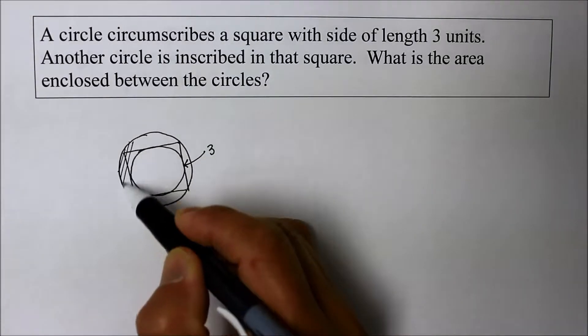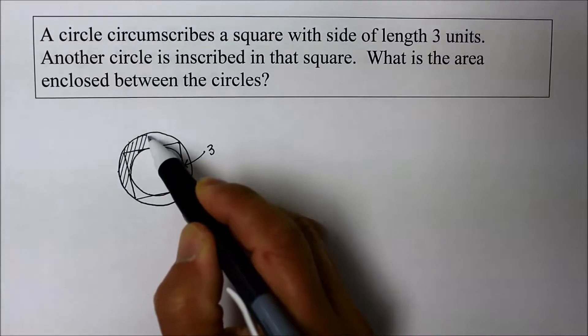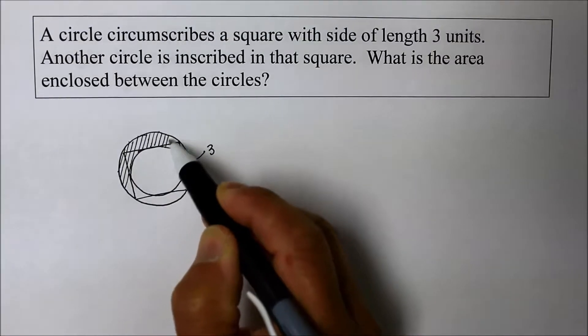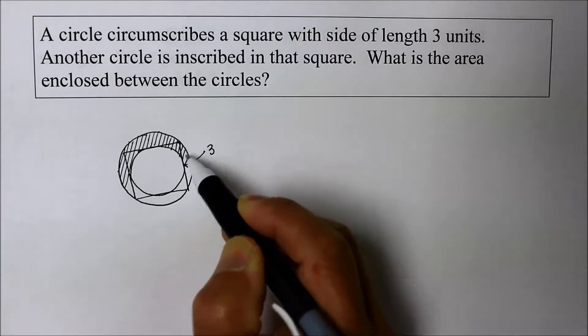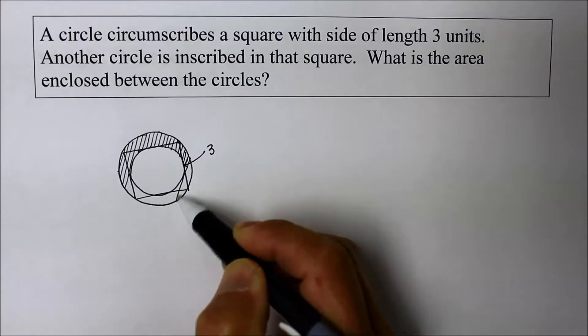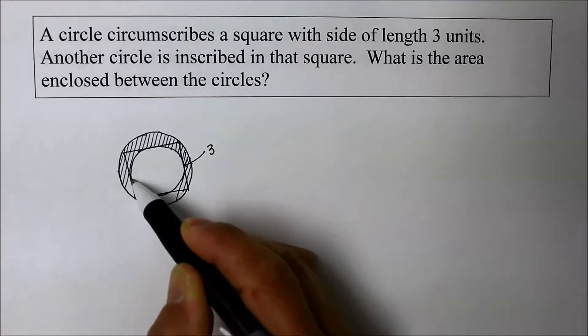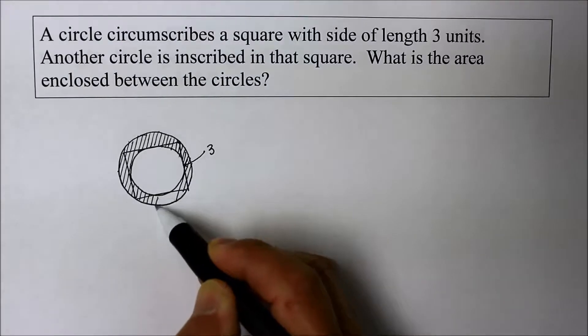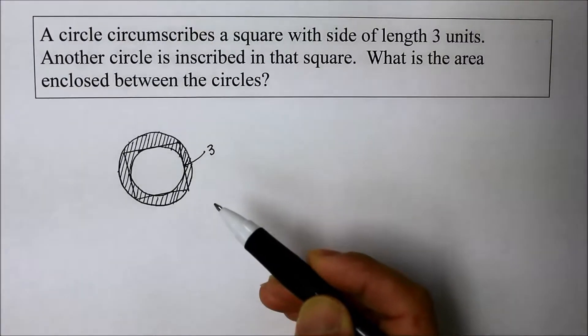So the square is there for reference, which is supposed to provide some information about the circles. To find the area of a circle, you need a radius. And since there is no radius given, you're supposed to try to figure it out from the square given.